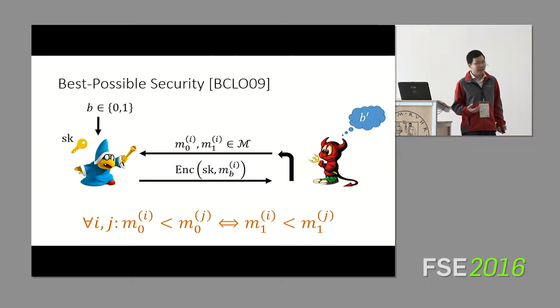But it turns out that if we impose a simple restriction, we can actually recover a meaningful and useful security notion, which is basically when the adversary submits pairs of messages on the left and right, if you consider the set of messages he submits on the left and the messages on the right, the ordering must be preserved. Therefore, if the adversary starts comparing ciphertexts, it's going to get the same response, regardless of whether it's getting left encryptions or right encryptions.